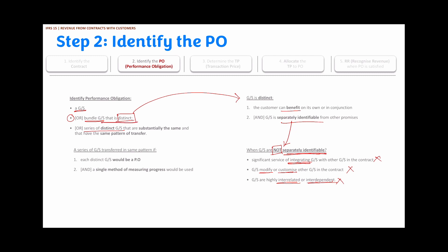So a good or service is distinct when the customer can benefit from it on its own or with other readily available resources, and when it is separately identifiable. Moving on, a performance obligation could also be a series of distinct goods or services. In our example of selling trucks, if we agree to sell three trucks and three annual maintenance contracts, each distinct good or service should satisfy a performance obligation and a single method of measuring progress should be used.